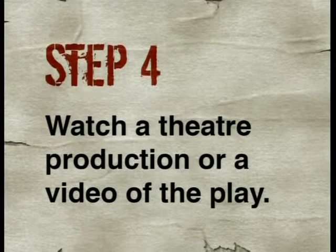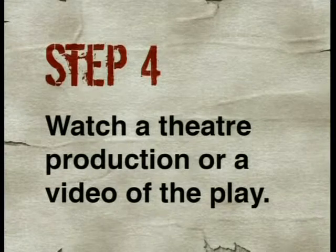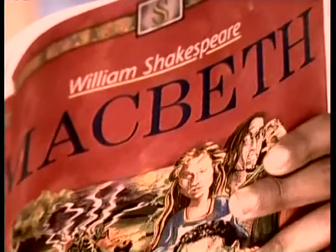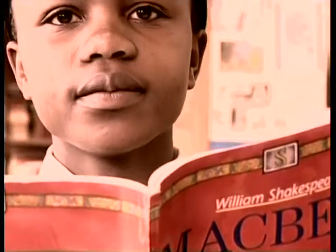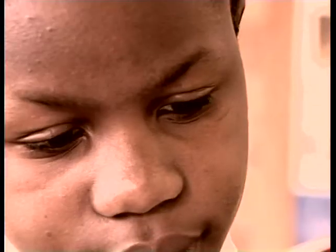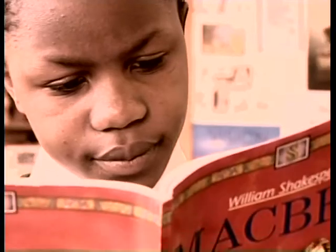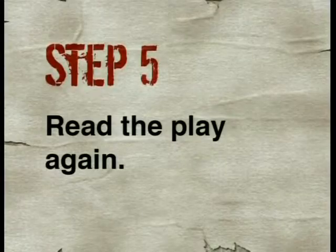Let's move on to Step 4: watch a theatre production or video with your copy. You have to train yourself to visualize the characters and actions that are happening on stage. Alternatively, you could rent or borrow a video production of the play from your local library or video store — make sure that it is as close to the original play as possible. Grab your copy of the play and read along with the video. Through the performances of the actors, the speeches will come to life and the passages you didn't understand before will become clear.